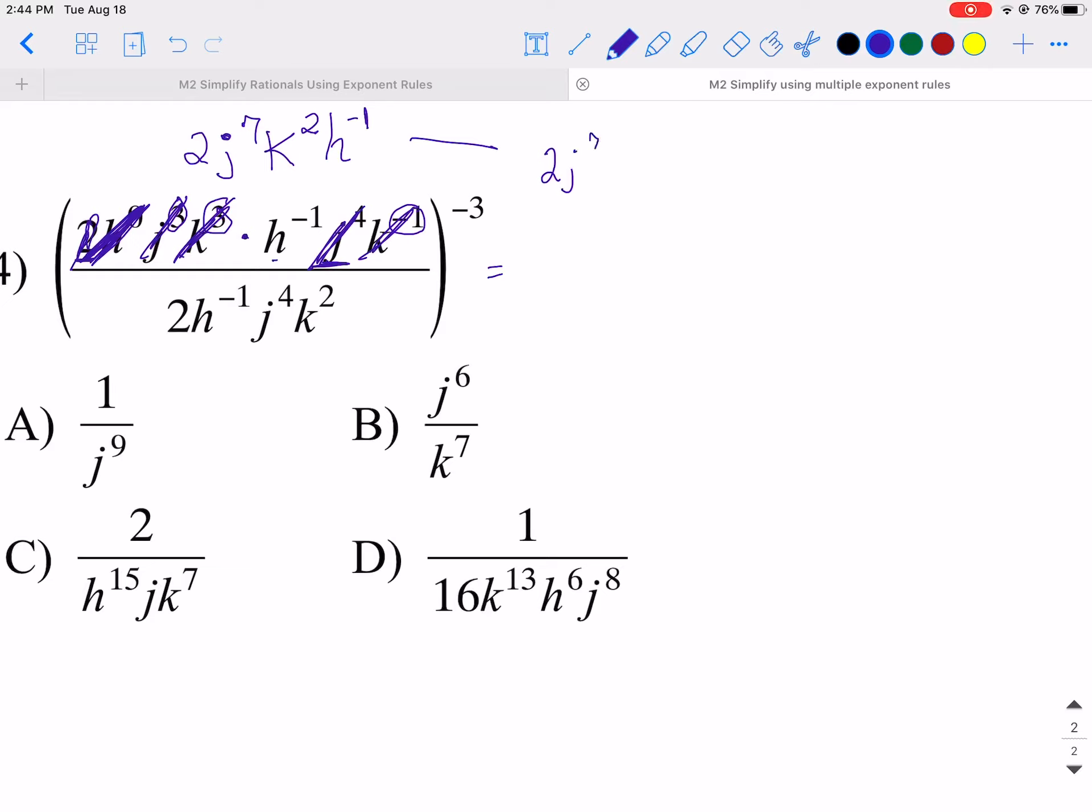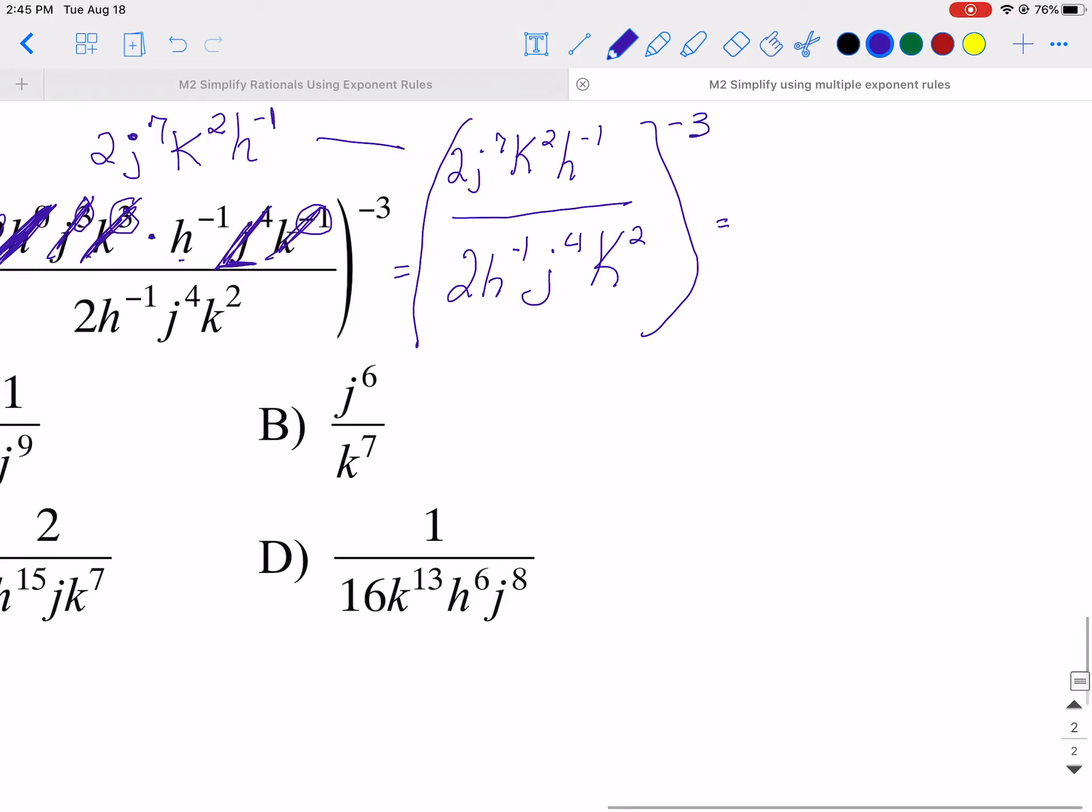So I'm going to bring this as my numerator. So 2 J7 K2 H to the negative 1. I'm not doing anything with it yet. 2 H to the negative 1. I'm just copying the denominator now. It's a lot of writing, but if you do these steps, you won't make mistakes. It's when you try to just do it in your head where the mistakes come. So let's see what we got here. I'm going to combine what's inside before I apply that negative 3 to all that. So let's do the inside the parentheses first.